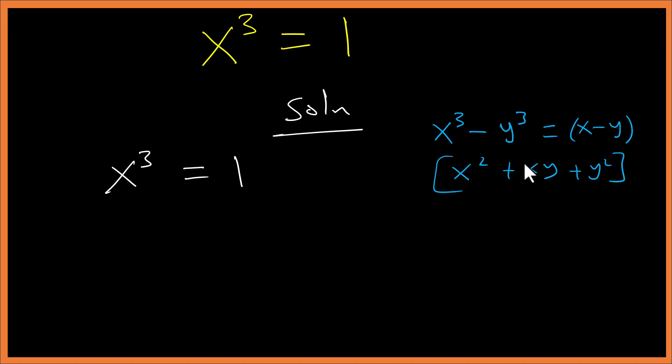So this side will be x³, let's join this one: minus 1 equals 0. All right, now from here, remember 1 to the power 3 remains as 1. So we can write this one as 1³. It is the same as that.